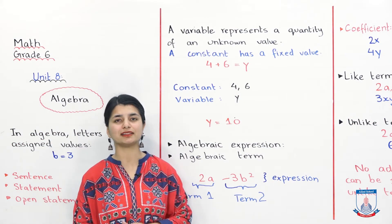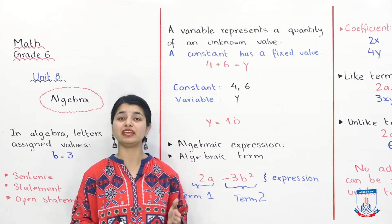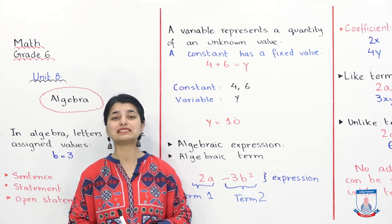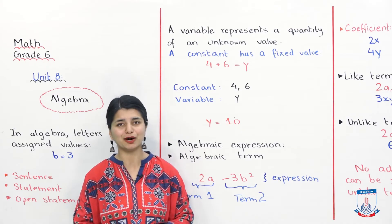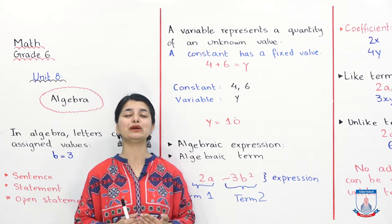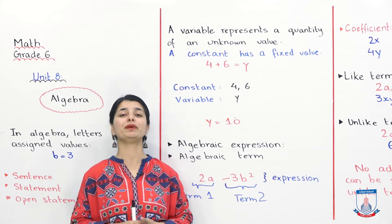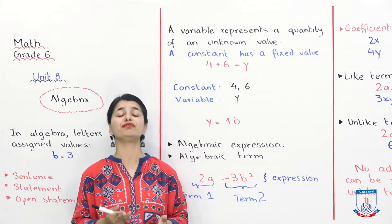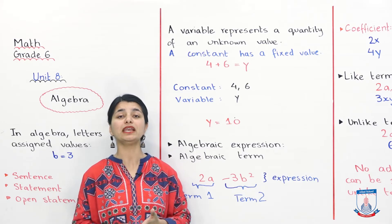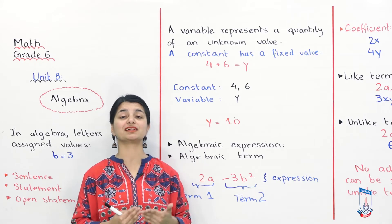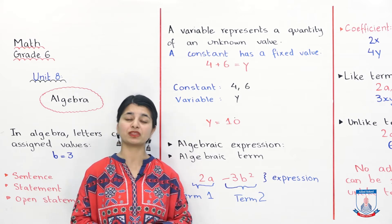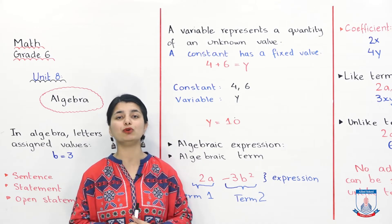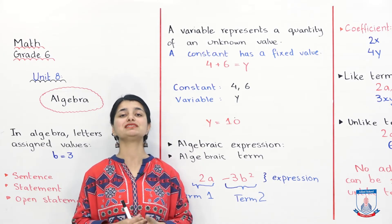In Algebra there are some important terms: variable, constant, and coefficient. Let's see what a variable is. When we assign letters to values, we call those letters variables. Varying means the thing can be different — it can go up and down. So variable means the thing can change, it can vary over time. You write a letter, and it can be determined that a fixed value has not been given to it. That's why we call that letter a variable.